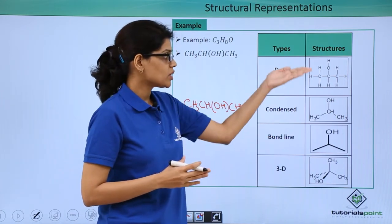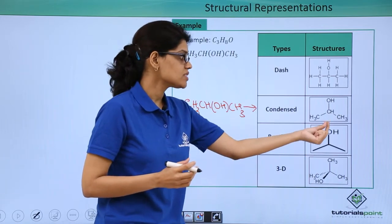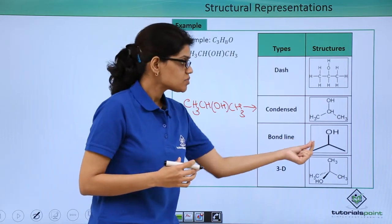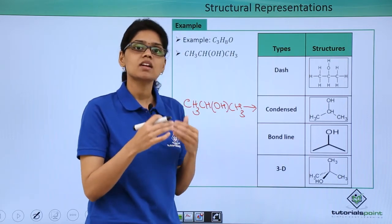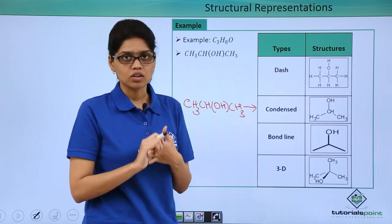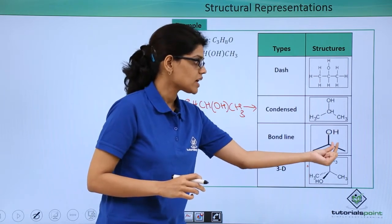You can see that as we go down, the bond line representation is actually representing using simple bonds. What do these bonds correspond to? In these bonds, we are assuming that carbon and hydrogen are already present or they are actually satisfying the octet already. This is nothing but CH3, CH, OH, and CH3.